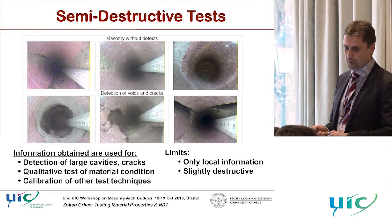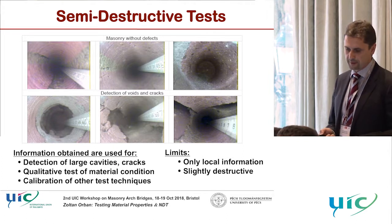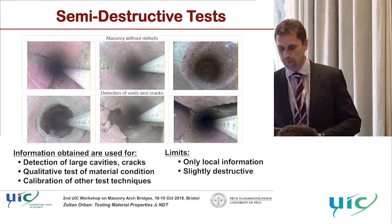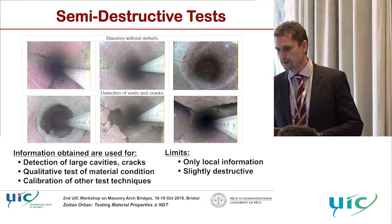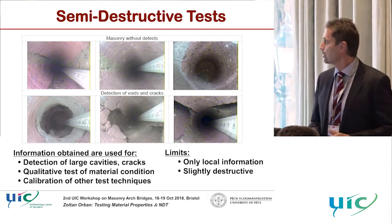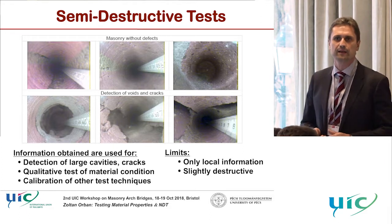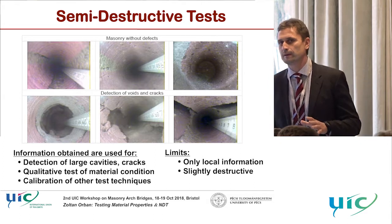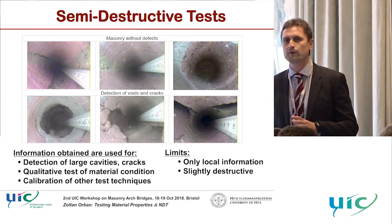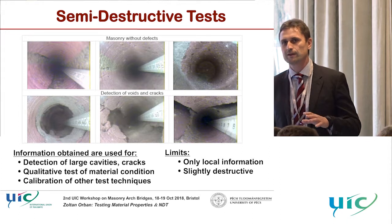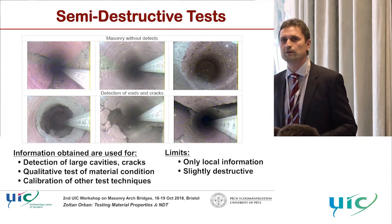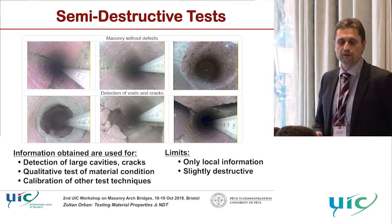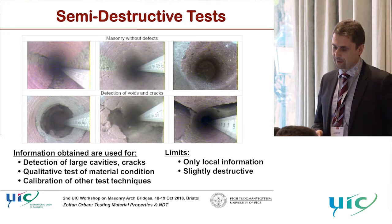The test can be used for detection of large cavities, cracks, and qualitative information on masonry condition. It can also be used for calibration of other test methods like radar, which is very important since other methods can be uncertain at certain points. Combined test methods allow us to get accurate information that neither method could provide alone. However, the limitation is that it gives only local information and is slightly destructive.